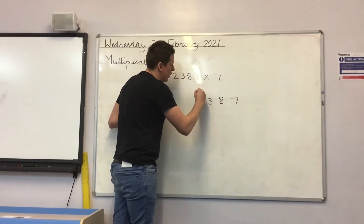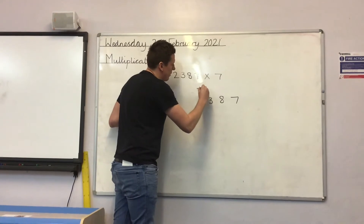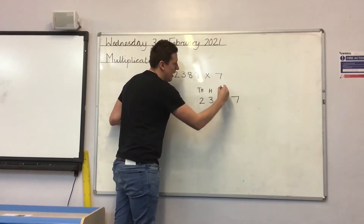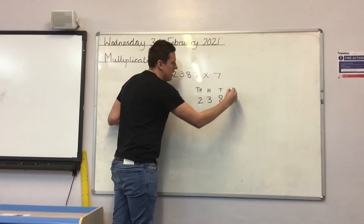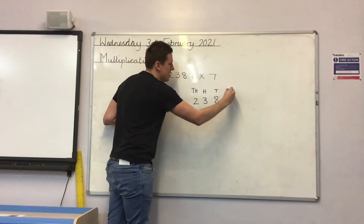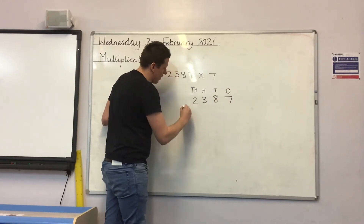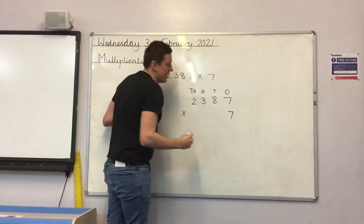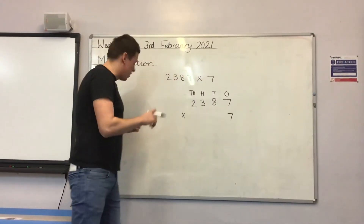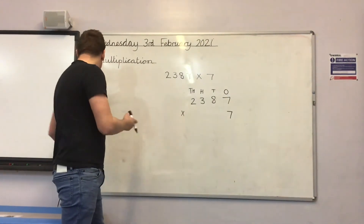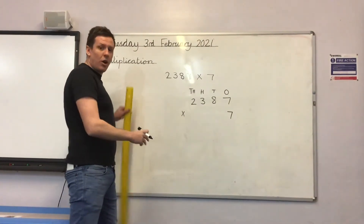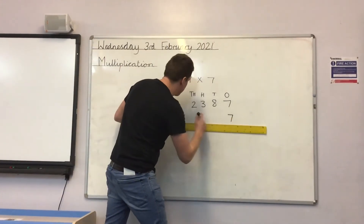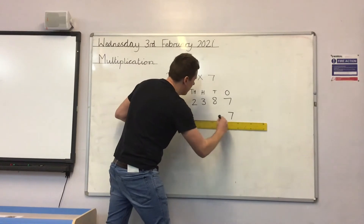Where we use the columns at the place value. So we have our thousands, our hundreds, our tens, and our ones. And we are multiplying by 7. Don't forget, as Mr Worthington always reminds you, you need to use your rumour.